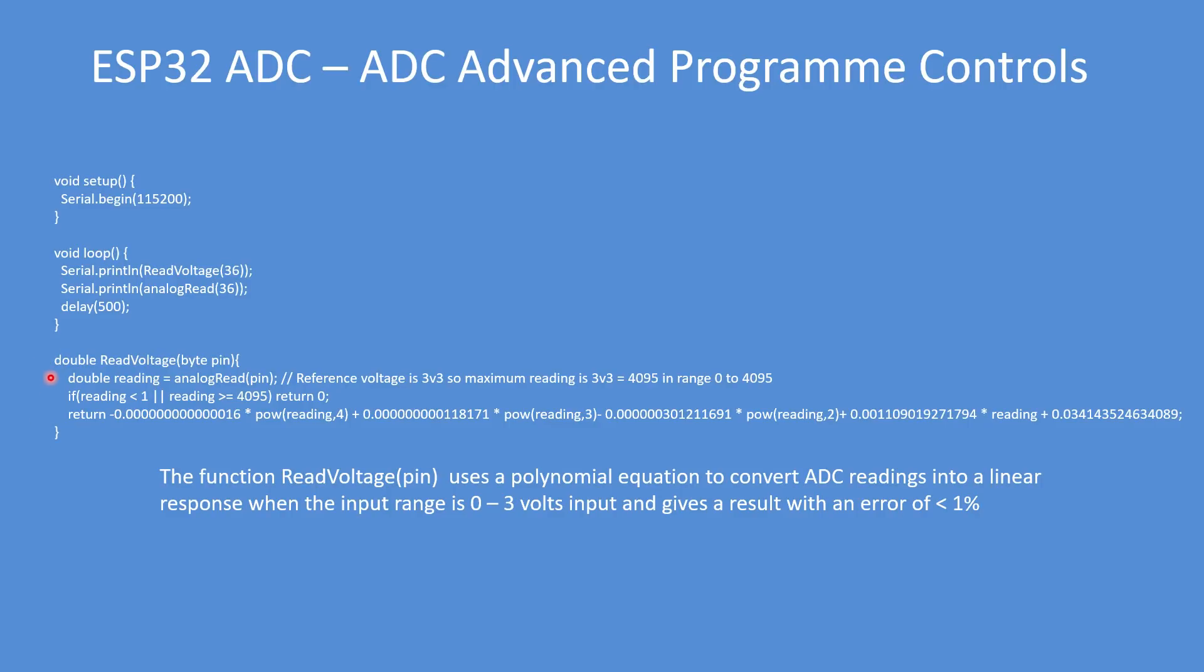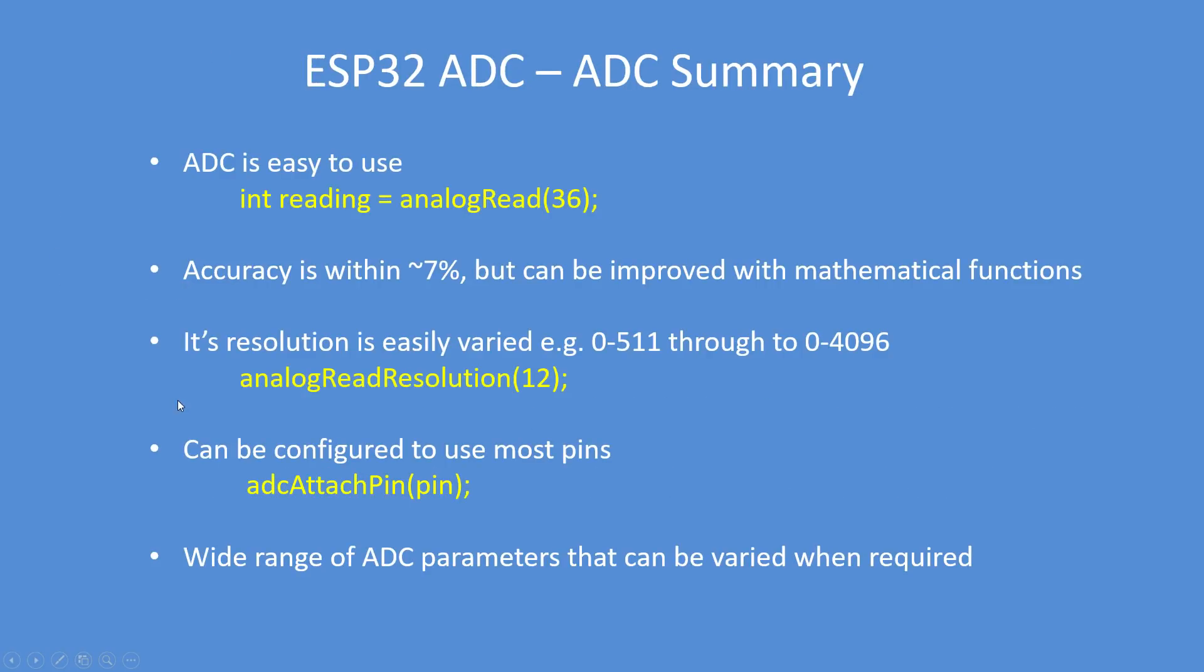That's all you need including your program to get a really accurate read voltage. Overall then, the ESP32 ADC is easy to use. You can get a reading with that simple statement. Default accuracy is approximately 7%, can be improved. You can vary its resolution and you can change its pin, and you can vary a wide range of ADC parameters when required or for your application. Enjoy.